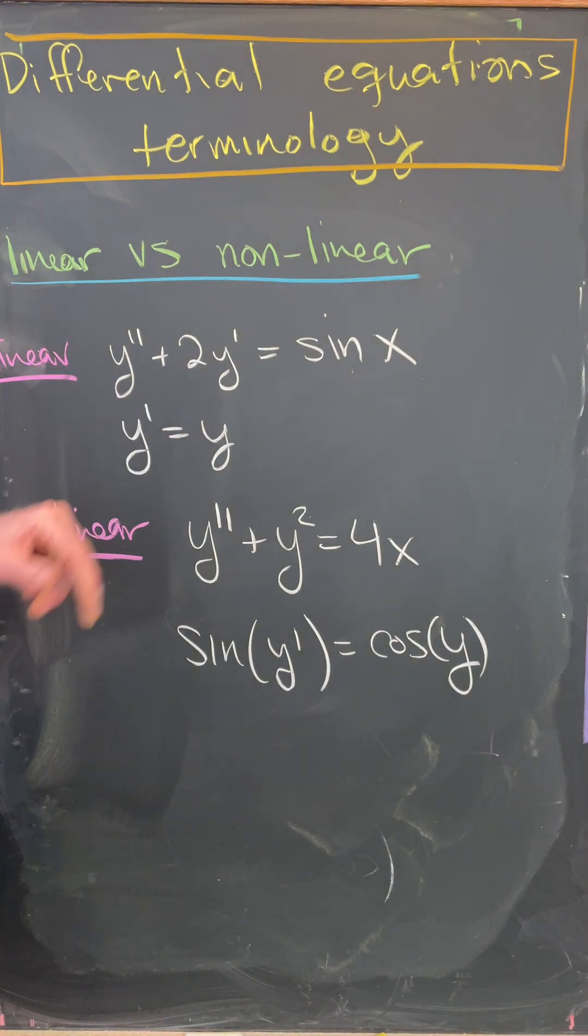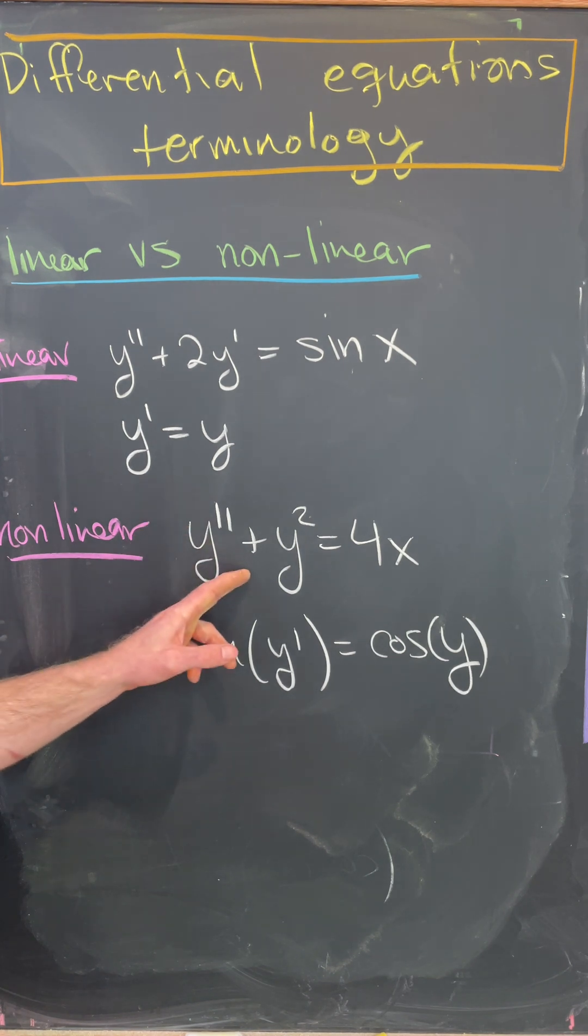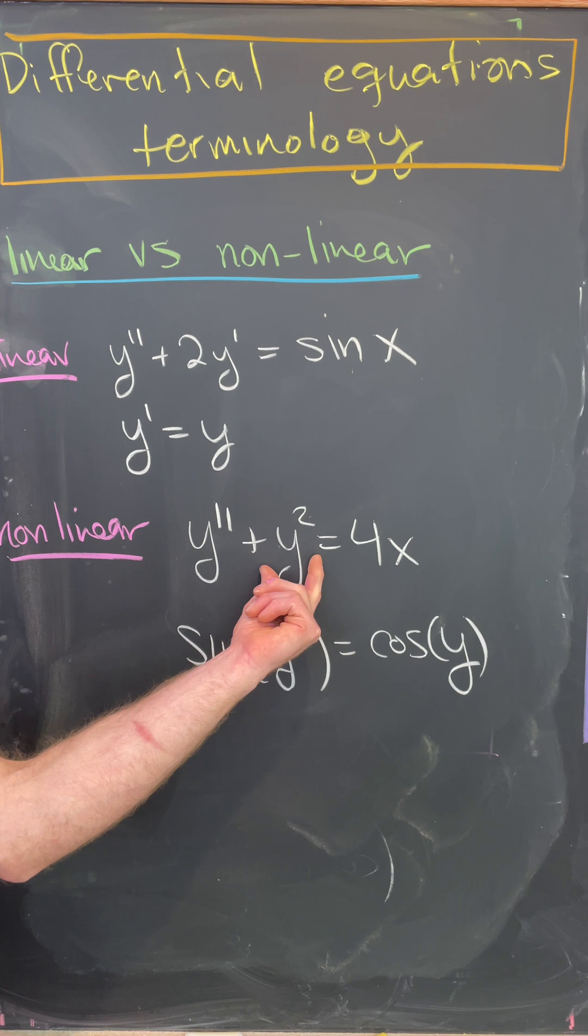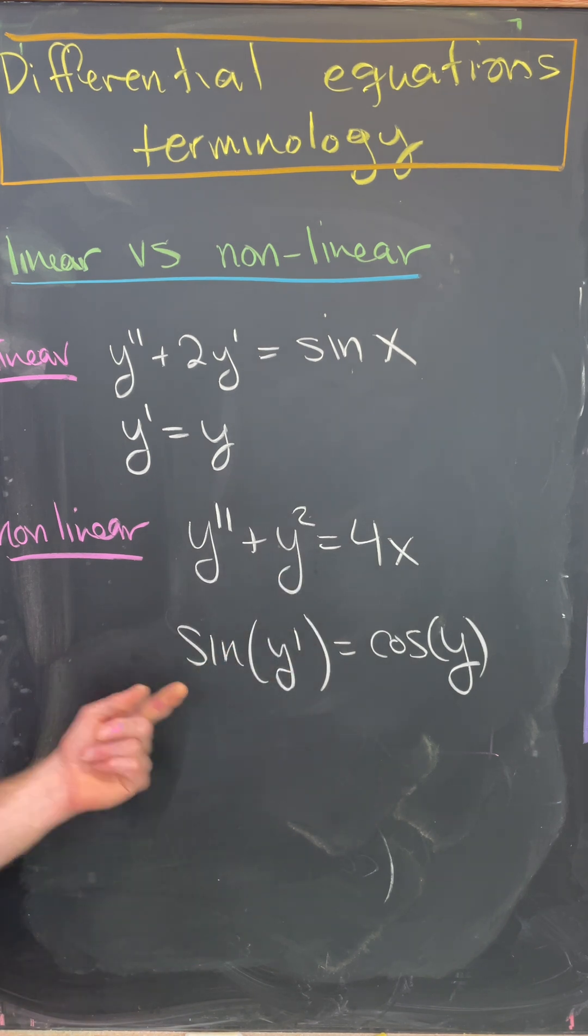So for example, y double prime plus 2y prime equals sine x is linear. y prime equals y is also linear, whereas y double prime plus y squared equals 4x is nonlinear because we're squaring this y. This is also nonlinear because we've got y's inside of nonlinear functions.